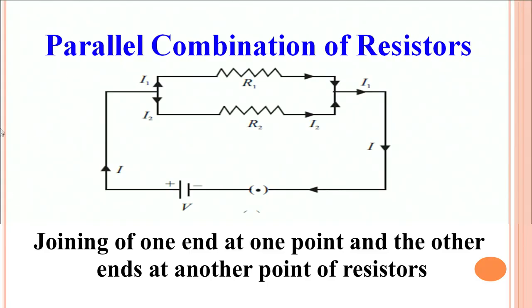Now for the parallel combination: again you have a battery in the circuit, with two resistances connected in parallel. In a parallel combination, one end of R1 is connected to one end of R2, and also the other end of R1 is connected to the other end of R2 — it is end-to-end connection on both sides.